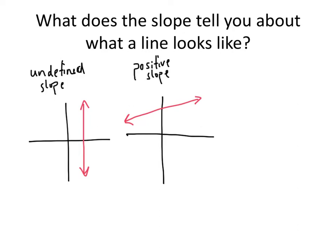Now, there are different kinds of positive numbers, and the bigger that positive number is, the steeper my line is. So this is going to be a line with a small slope, and this is going to be a line with a big slope. The bigger the slope is, the steeper the line is.